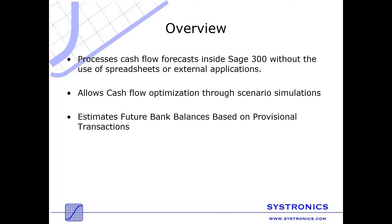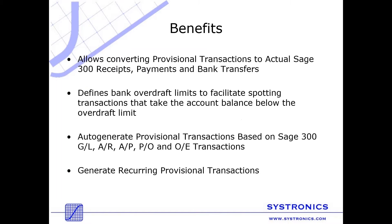It allows you to create provisional transactions such as receipts, payments, and bank transfers, and calculate bank balance forecasts based on these transactions as of any future date. This way you can see what effect a transaction would have on bank balance without actually creating that transaction in Sage 300 — they do not affect the actual bank balances. It is possible to modify each provisional transaction anytime, as long as it has not been converted into an actual transaction.